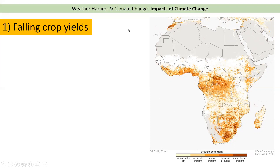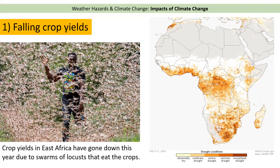As the climate changes, certain areas of the world are going to become much drier and therefore experience drought, meaning lower crop yields. More recently, crop yields in East Africa — countries like Kenya, Ethiopia, and Somalia — have experienced very large swarms of locusts. Locusts are insects that eat crops, and some of these swarms have billions and billions of locusts in them.